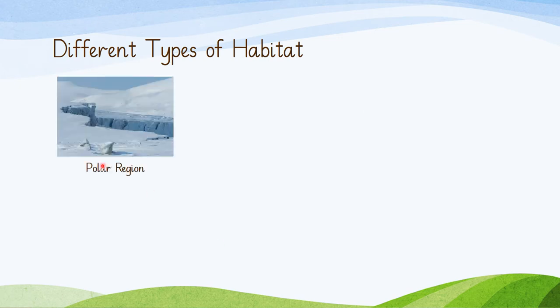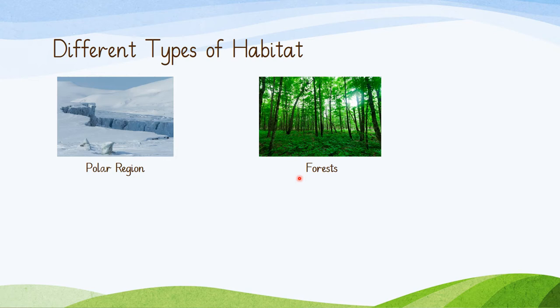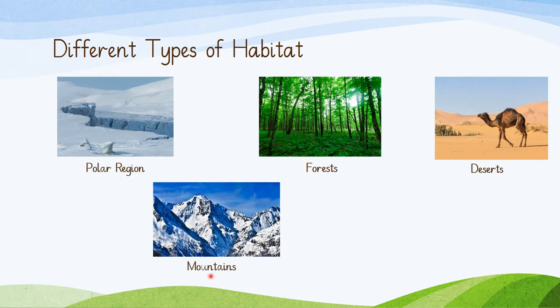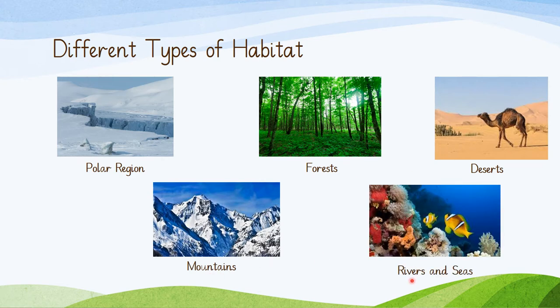These are the different types of habitat. First is polar region. The second one is forests. The third one is deserts. Number 4 is mountains. And number 5 is rivers and seas. All these different places have different types of living things in them. These living things cannot survive if you take them to other places. For example, camels will not survive in mountains, and fish will not survive in deserts.